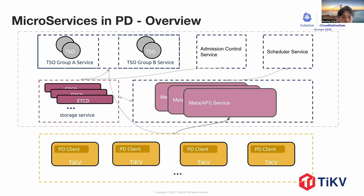Here is an overview of the microservice architecture in Placement Driver. As the picture shows, PD has been split into multiple services, each responsible for a specific function. It's important to note that there is a storage service here, which can be an etcd cluster. It's responsible for storing the data of the other services in PD. The other services can be looked at as stateless, and through the etcd API, all other services have the same high availability mechanism.